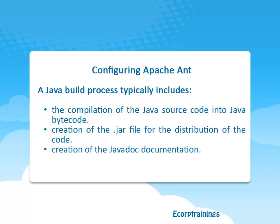Builds are based on three blocks: tasks, targets, and extension points. A task is a unit of work which should be performed — these are small, atomic steps, for example compile source code or create Javadoc. Tasks can be grouped into targets. A target can be directly invoked via Apache Ant. Targets can specify their dependencies, and Apache Ant will automatically execute dependent targets.